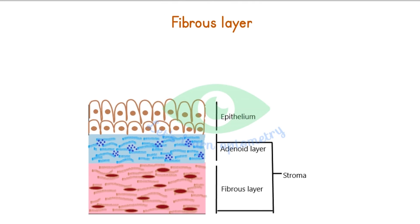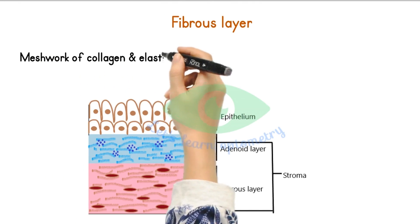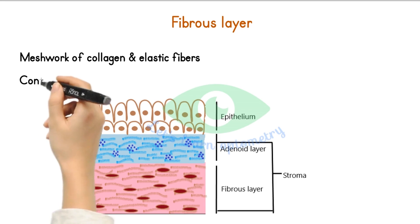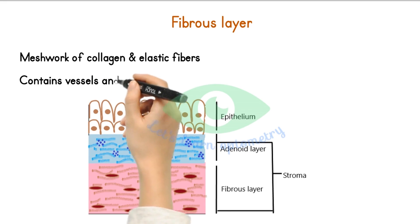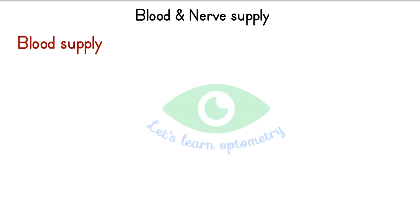The fibrous layer consists of a meshwork of collagenous and elastic fibers. It is thicker than the adenoid layer except in the tarsal conjunctiva where it is very thin. This layer also contains the vessels and nerves of the conjunctiva.